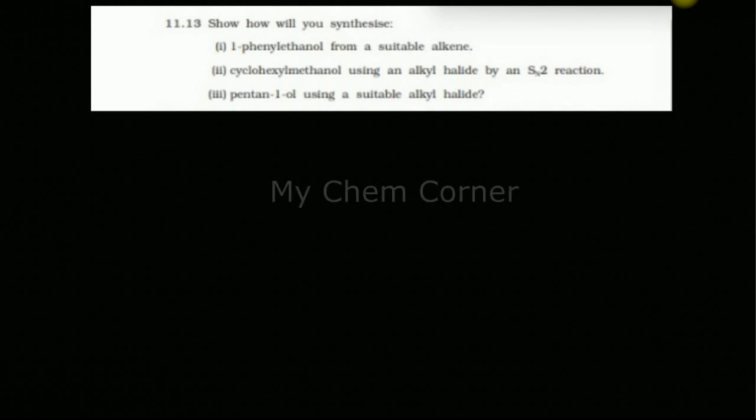So the first one says you need to prepare 1-phenylethanol from a suitable alkene. Alright, so before we start the preparation let's draw the structure for this. So we are solving the first one.